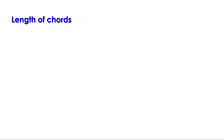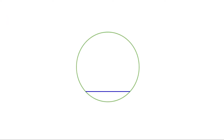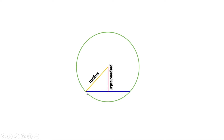We have seen that the length of a chord is determined by the distance from the center. Let me draw a circle, then draw a chord, and now draw a perpendicular from the center to the chord. Let us join the center to one end of the chord. We get a right angle triangle — this is a right angle because this is the perpendicular from the center to the chord. The hypotenuse of this right angle triangle is the radius.